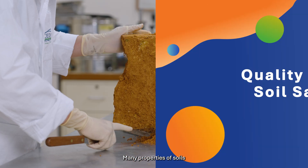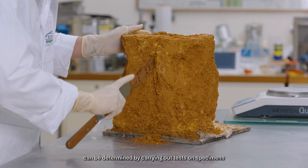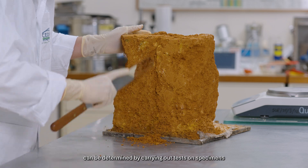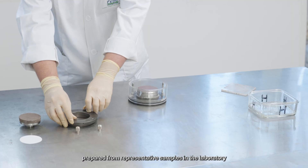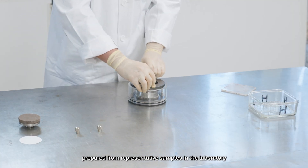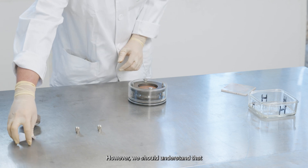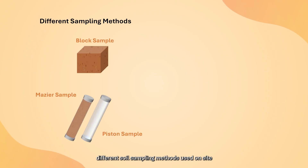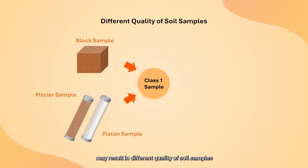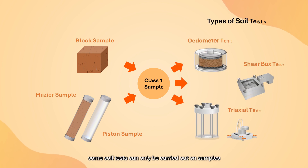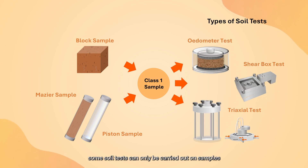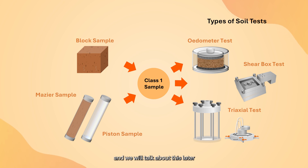Many properties of soils can be determined by carrying out tests on specimens prepared from representative samples in the laboratory. However, we should understand that different soil sampling methods used on site may result in different quality of soil samples. In fact, some soil tests can only be carried out on samples with a certain quality class, and we will talk about this later.